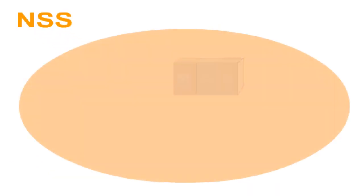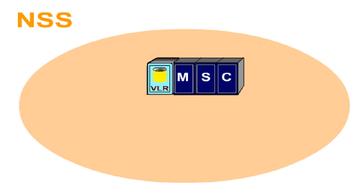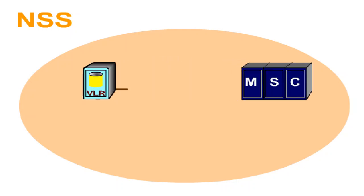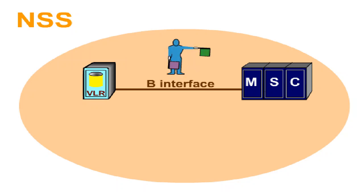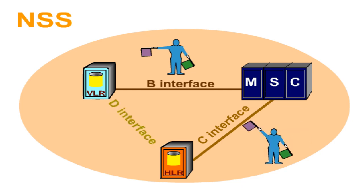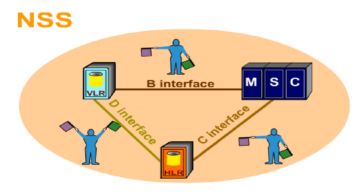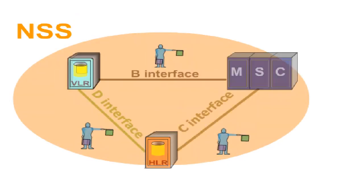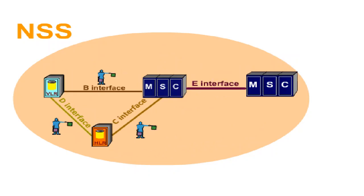Between the NSS elements, we find the following interfaces. Note that the Mobile Services Centre, MSC, and the Visitor Location Register, VLR, form a spatial unit. Between the MSC and the VLR, we find the B interface, which is used to transmit signalling data. The C interface is located between the MSC and the Home Location Register, HLR; it's also used exclusively for signalling data. The D interface provides the connection between the VLR and the HLR, and by the interfaces B and C, it transmits signalling data. The E interface is located between two MSCs; apart from signalling data, user data and speech can be transmitted as well.